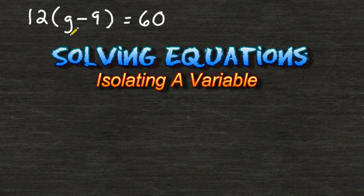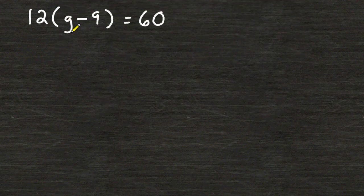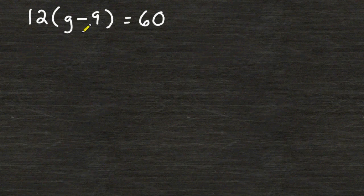In this equation we are trying to figure out what the value of g has to be so when we subtract 9 from that value and then multiply that difference by 12 we come up with the number 60.